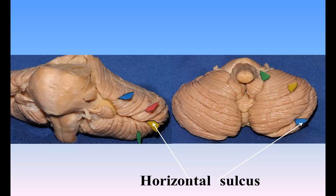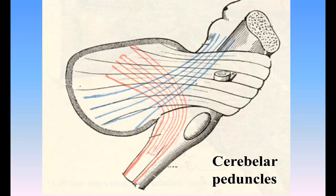The cerebellum is characterized by a laminated or foliated appearance. It is marked by deep, somewhat curved fissures, which extend for a considerable distance into its substance and divide it into a series of layers or leaves. The largest and deepest fissure is named the horizontal sulcus. It commences in front of the pons and passes horizontally around the free margin of the hemisphere to the middle line behind, and divides the cerebellum into an upper and a lower portion. Several secondary but deep fissures separate the cerebellum into lobes, and these are further subdivided by shallower sulci, which separate the individual folia or laminae from each other. Sections across the laminae show that the folia, though differing in appearance from the convolutions of the cerebrum, are analogous to them inasmuch as they consist of central white substance covered by gray substance.